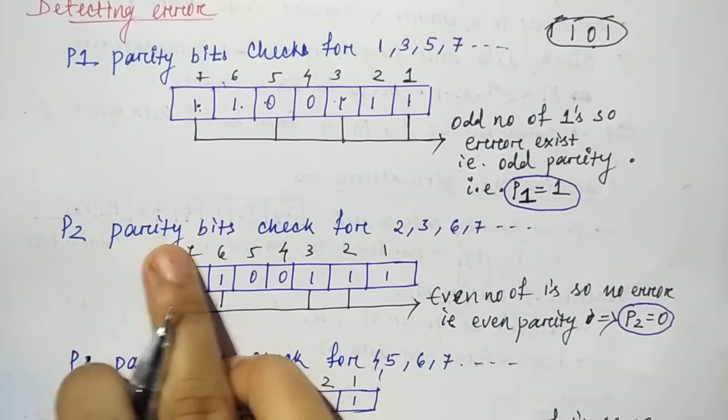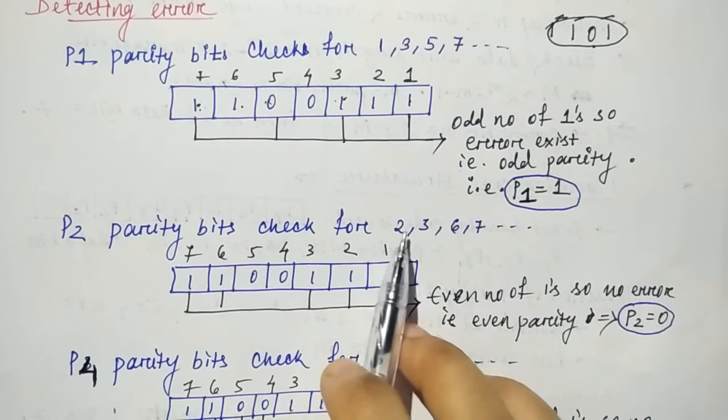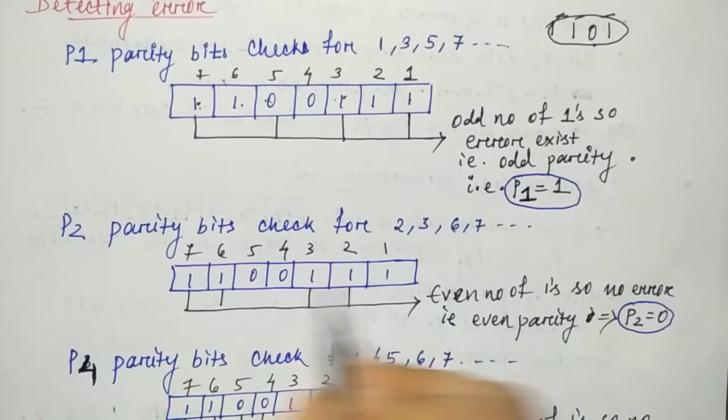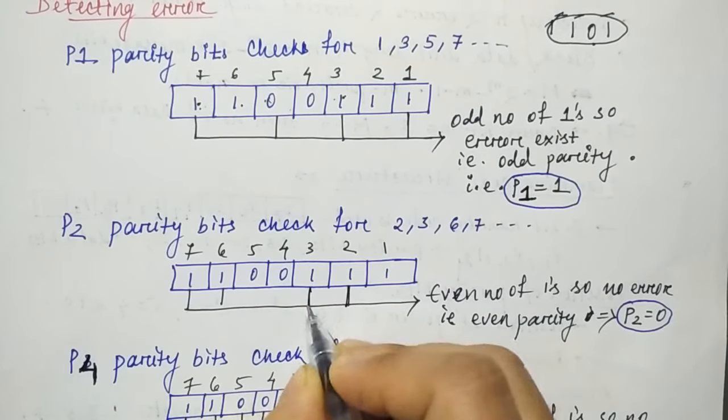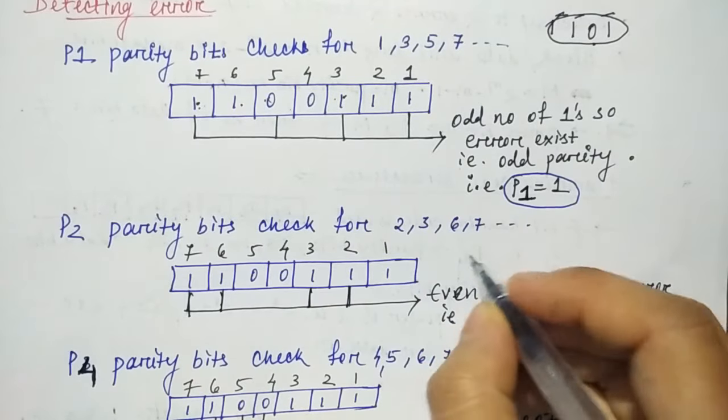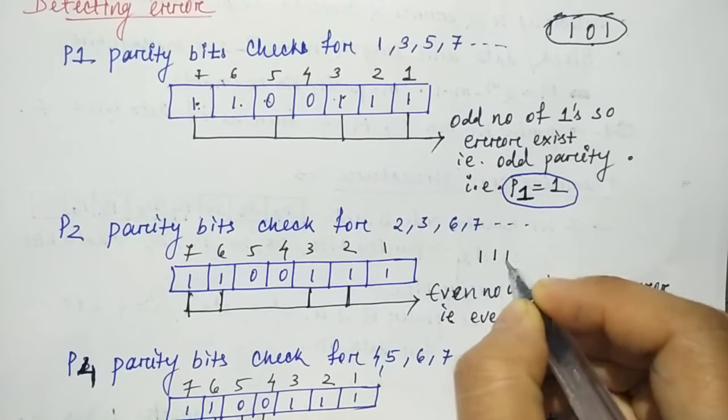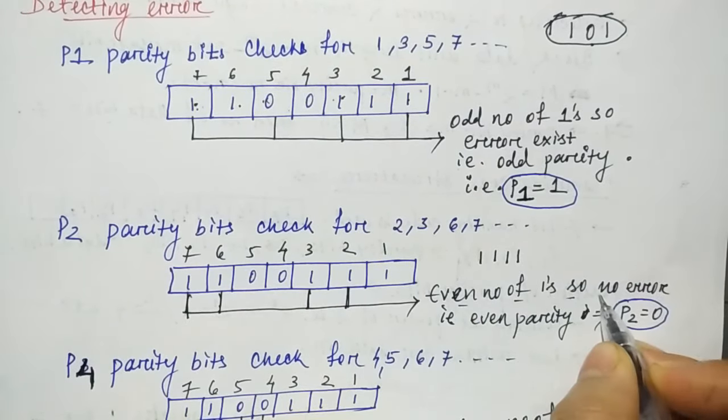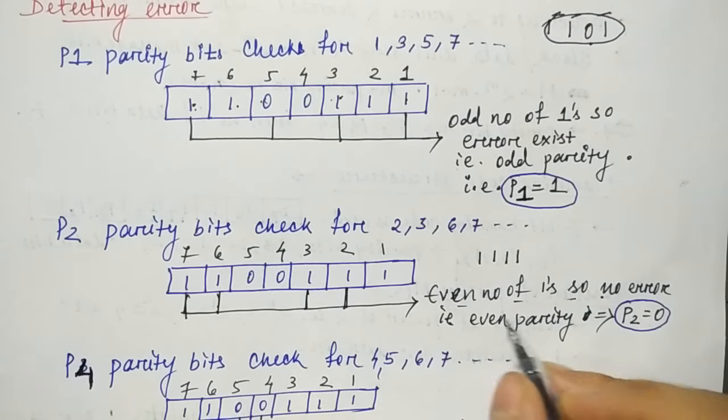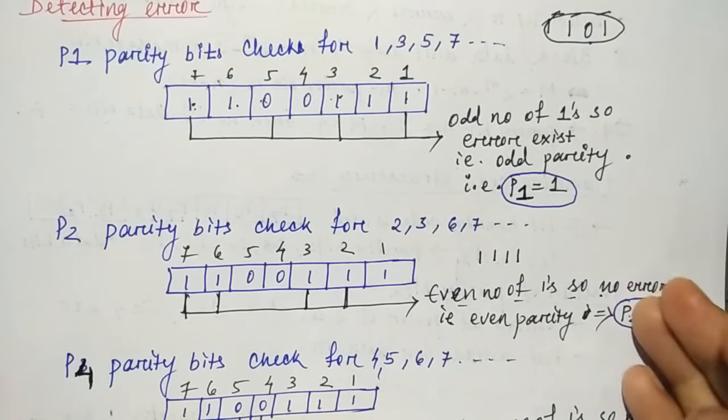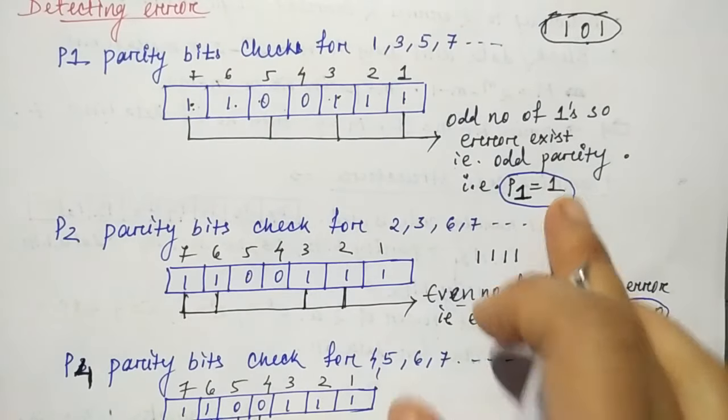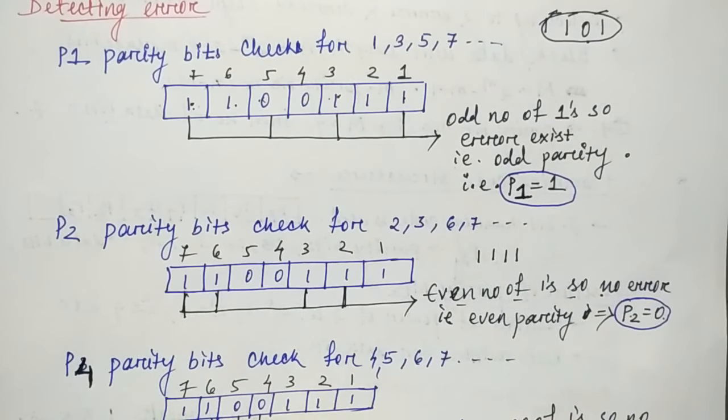For P2 parity bit check, which positions? 2, 3, 6, 7. We will draw this structure. In positions 2, 3, 6, 7, what data will we get? 1, 1, 1, 1. So there is an even number of ones. So there is no error. Even parity and P2 value will be 0 because we don't want any other one.